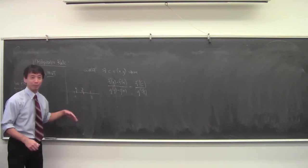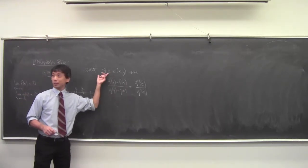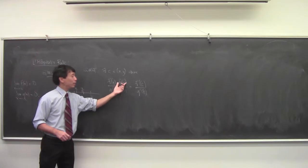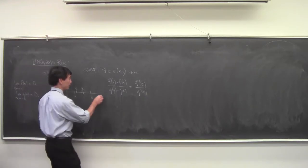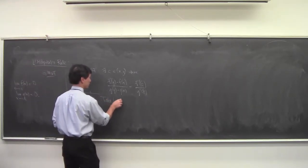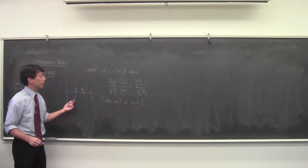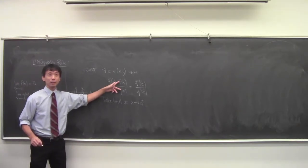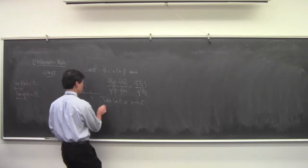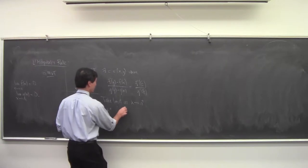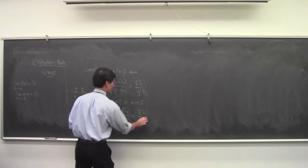Last time I gave the rigorous proof; now I'll give the hand-waving idea. Take the limit as X goes to A from the right-hand side. Then F(X) and G(X) are going to vanish, so you basically get — and this is not exactly true — F(Y) over G(Y) equals F'(C) over G'(C), where C is somewhere between A and Y.